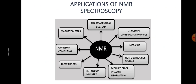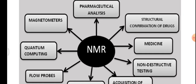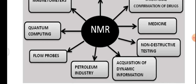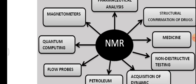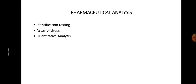The applications of NMR spectroscopy span various fields: pharmaceutical analysis, structural confirmation of drugs, medicine, non-destructive testing, acquisition of dynamic information, petroleum industry, flow probes, quantum computing, and magnetometers. In pharmaceutical analysis, it is used for identification testing, assay of drugs, quantitative analysis, and determination of structure.